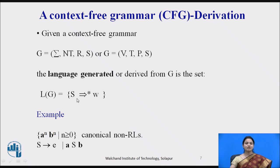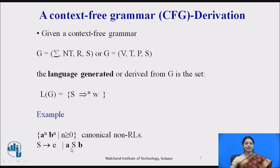In derivation, the Context-Free Grammar is in the format G equals Sigma, NT, R, S — or equivalently V, T, P, S. The language is generated or derived from G by starting with S and recursively expressing and producing words. For example, the language A raised to N, B raised to N where N is greater than or equal to 0 is a canonical non-regular language. The production will be: S produces null, or S produces A S B. This can be produced using the S non-terminal recursively.